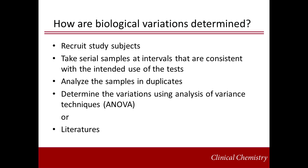Within-subject and between-subject biological variations are determined by conducting a biological variation study. The first step is to recruit study subjects of interest — either healthy individuals or patients with stable disease, depending on the context. The second step is to take serial samples from study subjects at regular intervals consistent with the intended use of the test. Next, the samples are analyzed in duplicates, and statistical techniques such as analysis of variance (ANOVA) are used to determine the analytical, within-subject, and between-subject biological components of variation.